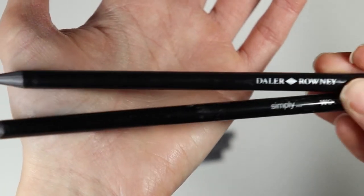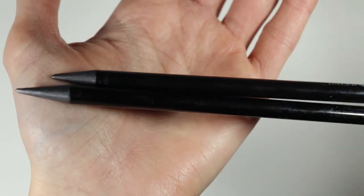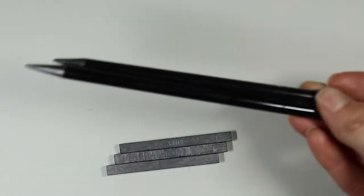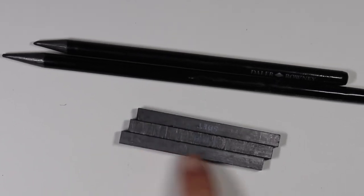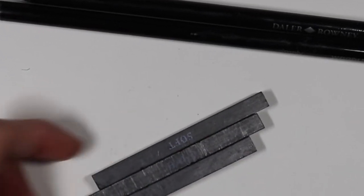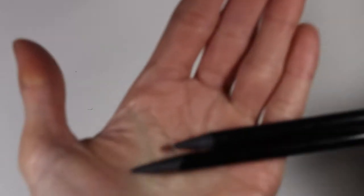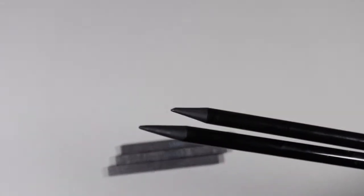Number three on my list are these woodless graphite pencils. Sometimes they come in graphite drawing sets, other times they don't, but I'm offering this as an alternative to these graphite sticks which might be a little bit intimidating to some. I have two of these woodless graphite pencils. I believe the grade on these is 2B.